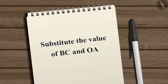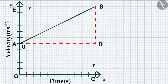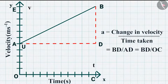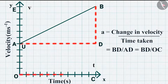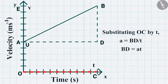We can substitute the values of BC and OA to get v = BD + u. From the graph we can find that acceleration a = change in velocity / time taken = BD / AD = BD / OC. Substituting OC by t, we get a = BD / t, therefore BD = at.